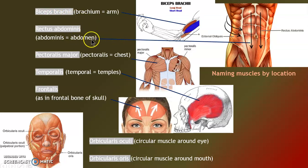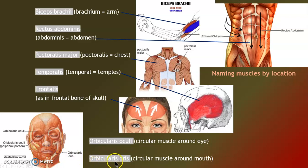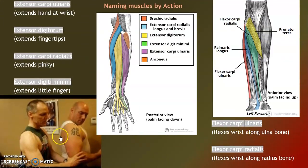The sartorius is the tailor's muscle. Brachium means arm, so the bicep is the two-headed arm muscle. Rectus abdominis is the straight abdominal muscle. Pectoralis major — we have a minor as well. Temporalis connects to the temporal bone of the skull. The frontalis connects to the frontal bone — that look of surprise is the frontalis in action. Orbicularis means circular; oculi means eye.